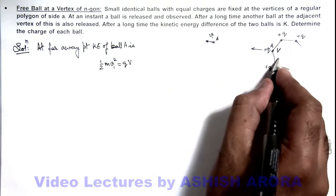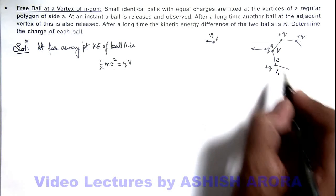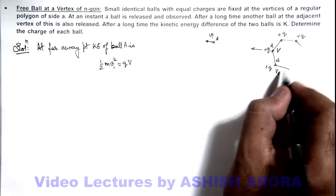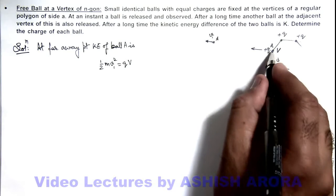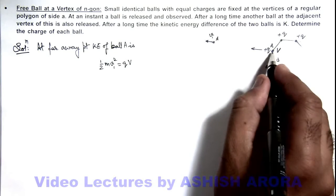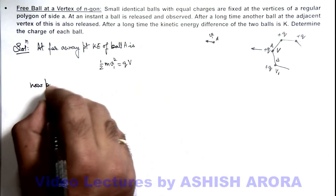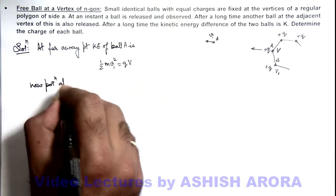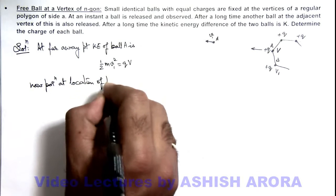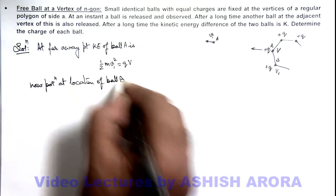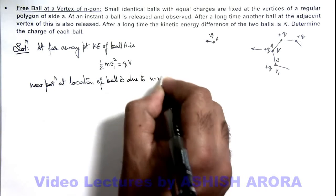Now if we release this ball B, and here we can consider potential is v₁, then v₁ can be given as same as v minus the potential due to this ball because this is not present as it was earlier released. So here we can write now potential at location of ball B due to n-1 balls is...